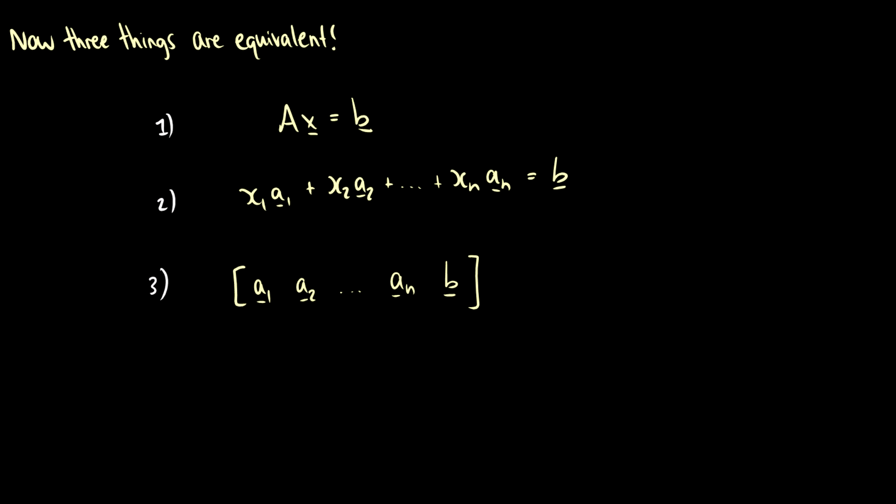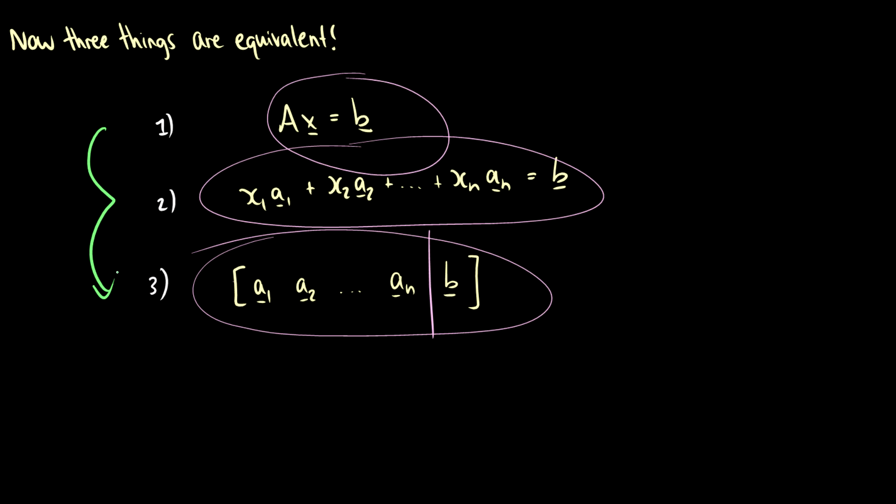So now we can see that we have three things that are equivalent. The solution set of Ax is equal to b is the same as the solution set to x1a1 plus x2a2 all the way up to xnan is equal to the vector b, which is equal to the solution set of the augmented matrix a1 through an with the augmented column b. So we can go between these ones at any time we want. We can take a matrix vector product and turn it into an augmented matrix. We can go through the number two step if we want, but these three things are equivalent and they all have the same solution sets.